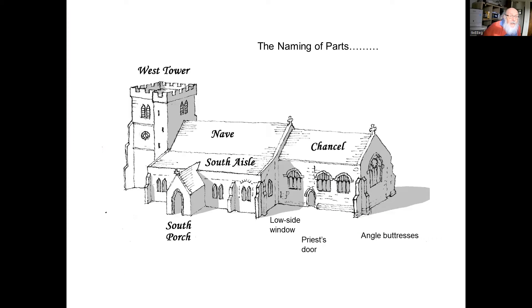Just a bit of basic stuff — the naming of parts. Here is a typical parish church. The main body of the building is called the nave, from a Latin word for a ship. That's where the congregation sits, and it's often extended, widened by aisles. Most churches have a tower at the west end; big ones sometimes have a tower in the centre. This has got a west tower.